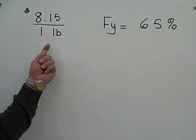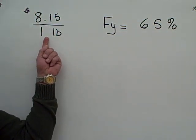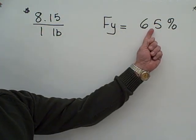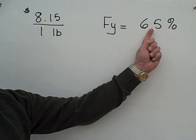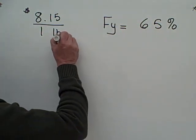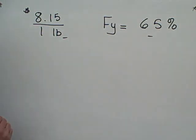What that means is that the one pound of as-purchased meat is going to shrink to 65% by the time it is edible or servable and gone through trimming and cooking.